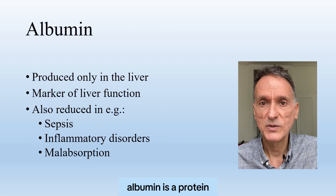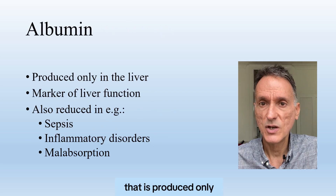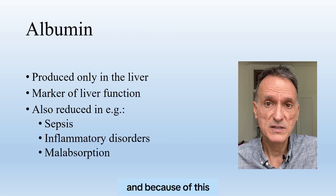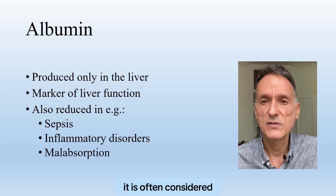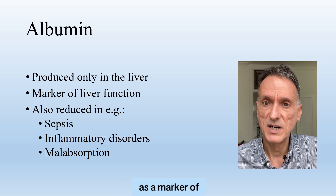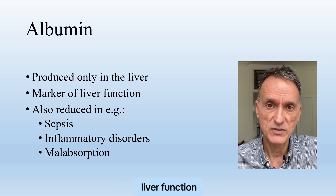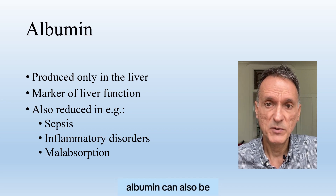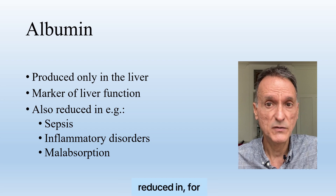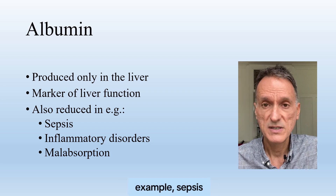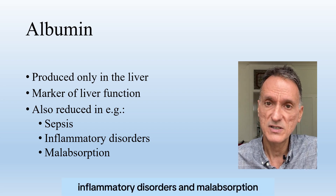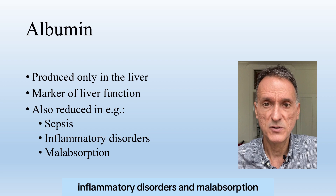Albumin is a protein that is produced only in the liver, and because of this, it is often considered as a marker of liver function. However, albumin can also be reduced in, for example, sepsis, inflammatory disorders, and malabsorption.